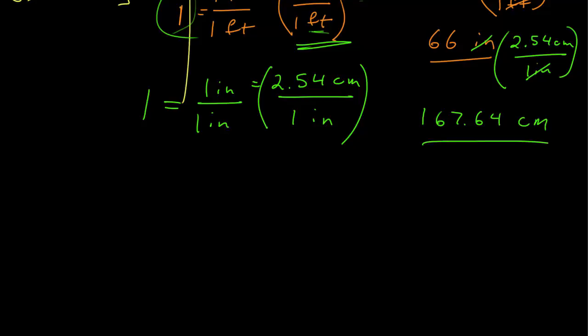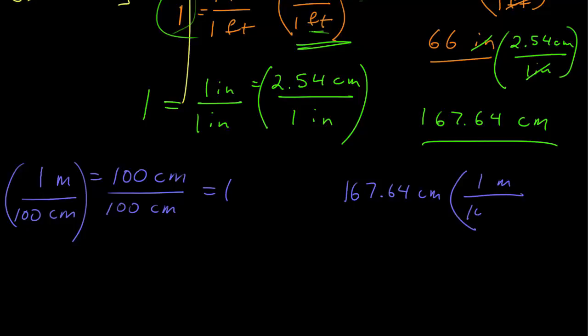And now I'm left with centimeters. Now my final conversion is into meters, and I know that 1 meter is equal to 100 centimeters. I want to get rid of centimeters, so divide both sides by centimeters. This is equal to 1, means this ratio is equal to 1, and 167.64 centimeters, 1 meter over 100 centimeters, centimeters cancel, 1.6764 meters.